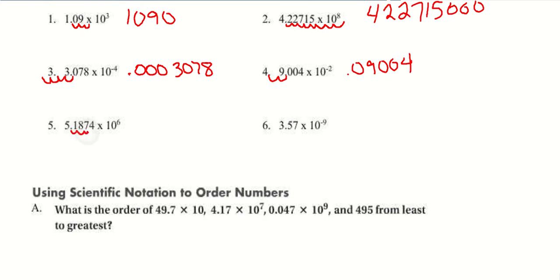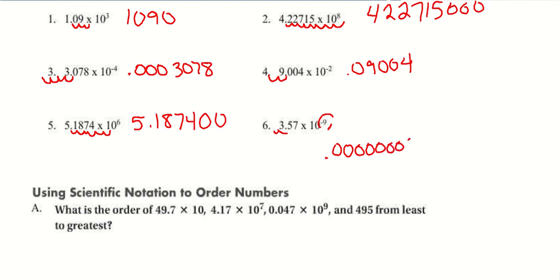Two more. For the first one, we move 6 spots and need 2 decimal places, giving 5.187400. Now notice it takes 1 move to get the decimal point in front of the 3, so I've already used 1 out of the 9 moves — meaning I need 8 more zeros. So 9 becomes 8, and then 3, 5, 7 with 8 zeros. For the last one here, there are 5 numbers and the exponent is 8, so I need 3 zeros — 2 moves mean I need 1 more zero to make 3.